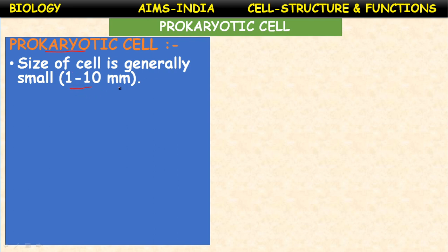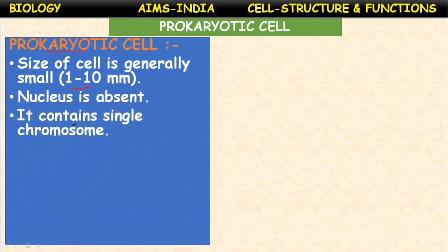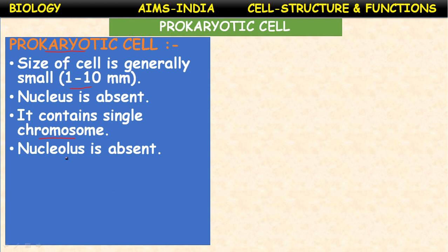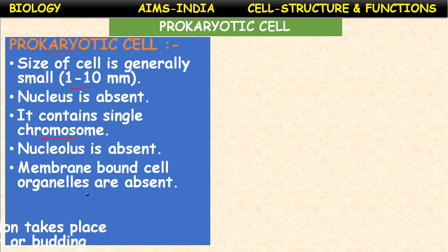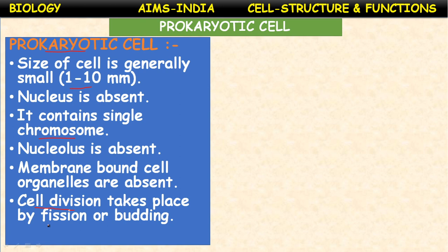The size of the prokaryotic cell is generally between 1 to 10 micrometers — very small. The nucleus is actually absent in prokaryotic cells. It contains a single chromosome. The nucleolus is also absent. The nuclear membrane is absent. Membrane-bound cell organelles are absent. In the typical cell, several membrane-bounded organelles like mitochondria, Golgi complex, ribosomes, lysosomes, and chloroplasts are absent in the prokaryotic cell. Cell division takes place by simple binary fission or budding.